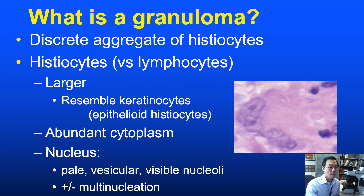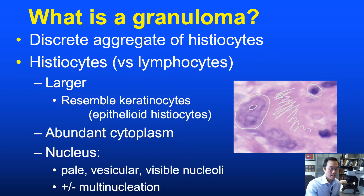Compared to lymphocytes — relatively small, with round hyperchromatic nuclei and scant cytoplasm — histiocytes are much larger, sometimes quite large and resembling keratinocytes. When histiocytes form granulomas, the term 'epithelioid histiocyte' is often used, reflecting their relatively abundant cytoplasm and large, pale or vesicular nucleus, often with a visible nucleolus. Another characteristic of histiocytes in granulomatous inflammation is multi-nucleation — two, three, or even dozens of nuclei within a multinucleated histiocyte.